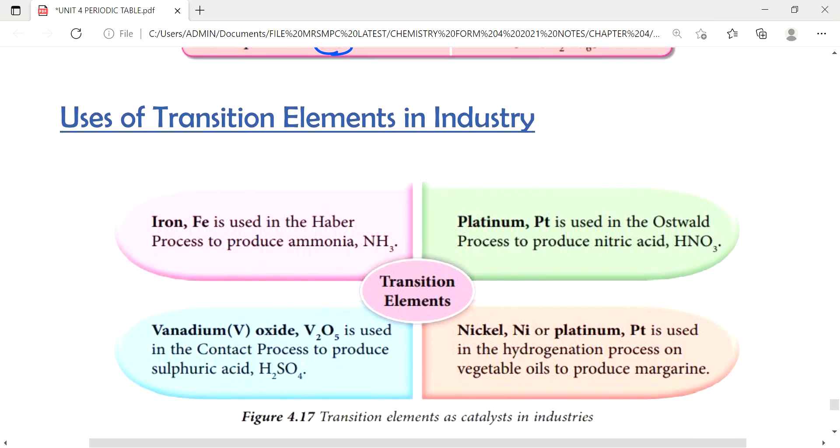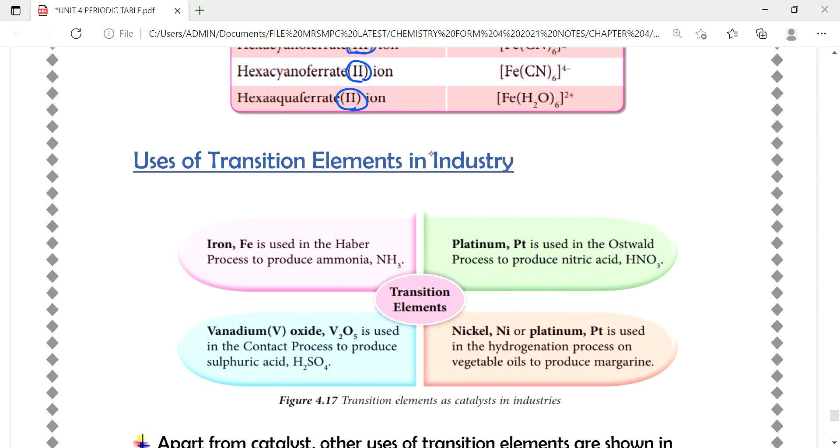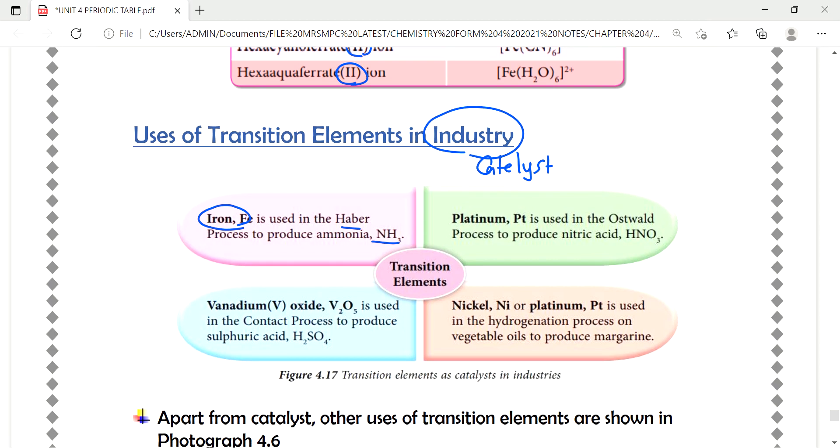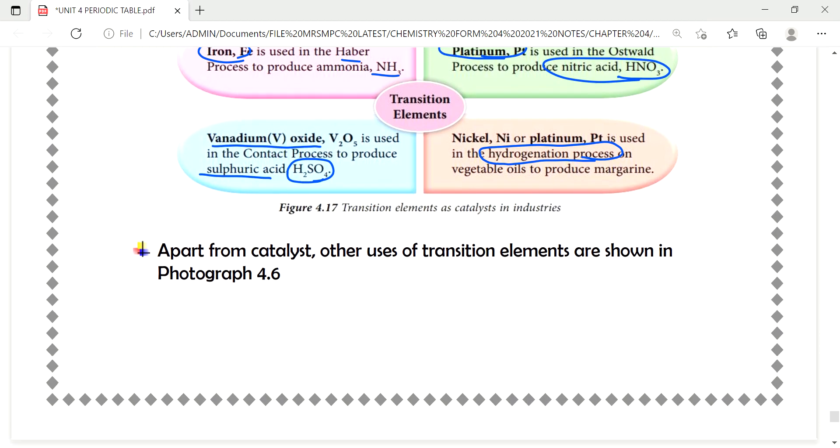Next is the uses of transitions elements in industry. Usually we use them in industrial processes as a catalyst. As I told you earlier, catalyst's purpose is to speed up the rate of reactions but it is not involved in chemical reactions. It only speeds up. For example iron, we use in the production of ammonia. Vanadium oxide, we need catalyst also to speed up the process of production of sulfuric acid. Platinum is used in the process to produce nitric acid. And nickel as well we use in hydrogenation process. So these are all catalysts that involve transition element.